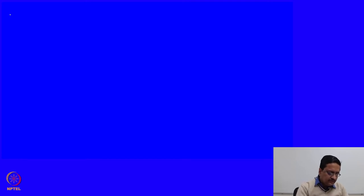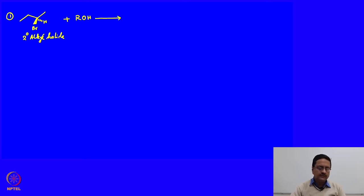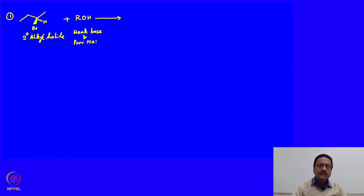Let us take a few simple examples. Suppose we are using this chiral molecule which is a secondary alkyl halide. If we treat this secondary alkyl halide with an alcohol, what would be the product? ROH is a weak base and a poor nucleophile. Therefore, in this case both SN1 and E1 products would form.